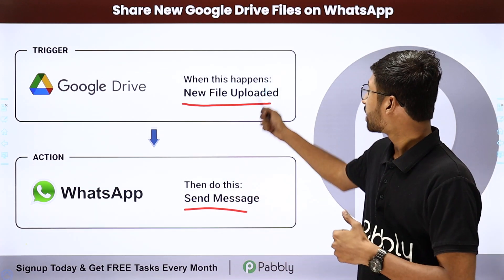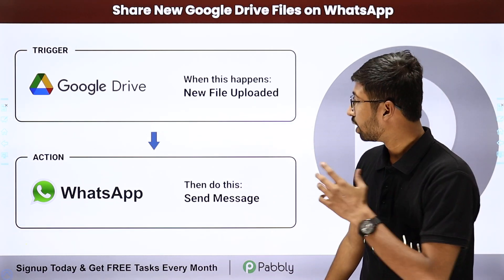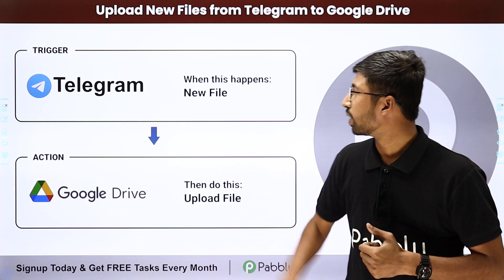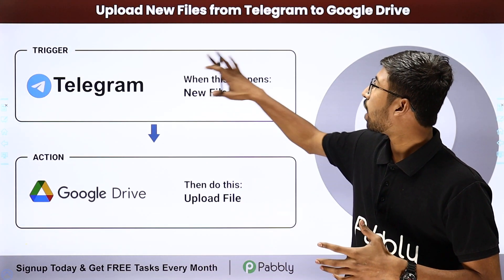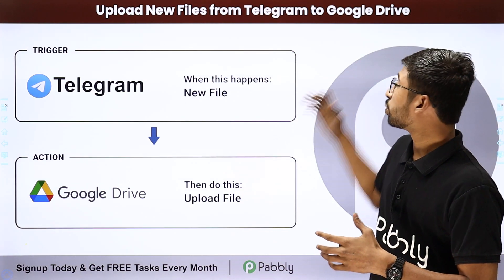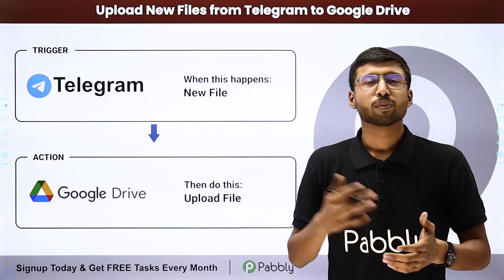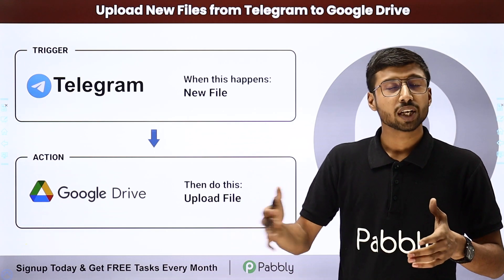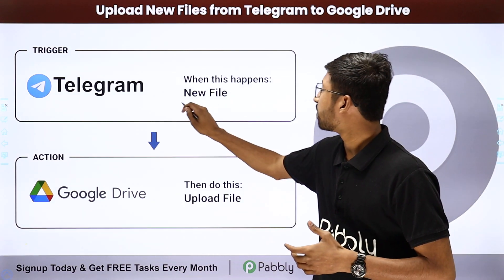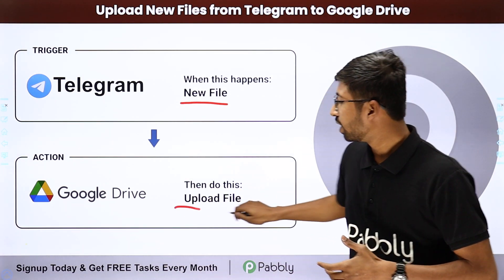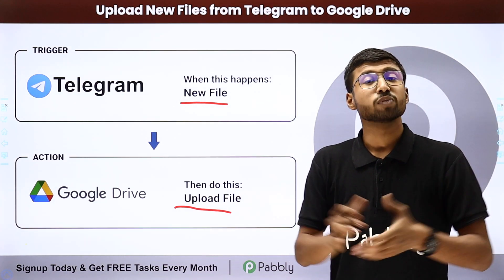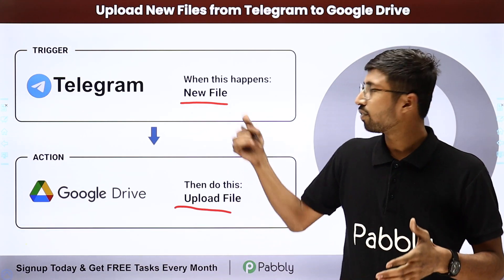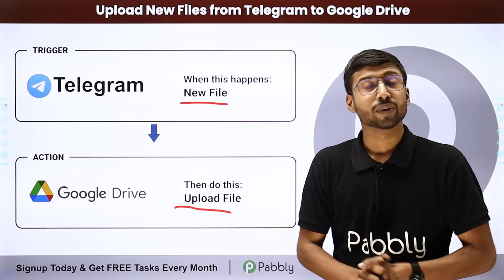The next automation is related to the same idea — instead of sending a notification, you can actually upload the file as well. Using the automation of how to upload new files from Telegram to Google Drive, whenever a new file, image, or media is shared on your Telegram group or channel, it will automatically be uploaded to your Google Drive. If you have a Telegram group or channel with hundreds of people, you can archive all shared media to Drive effortlessly.